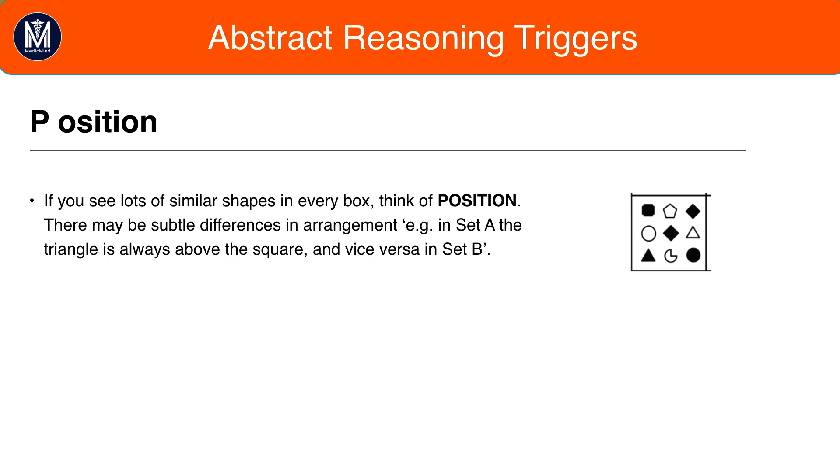If for example you see a triangle and circle next to each other in set A it doesn't necessarily mean there has to be two things next to each other in set B. Instead there could be a square on top of a circle in every box in set B. You can also look for diagonal relationships as well but adjacent and above and below relationships are much more common.